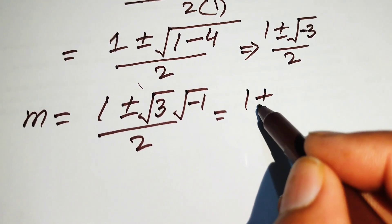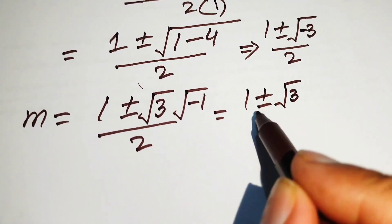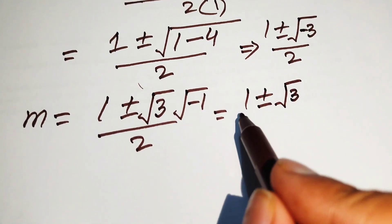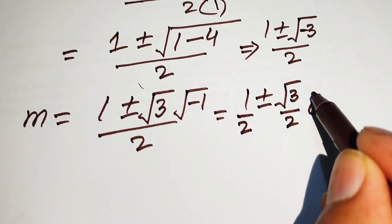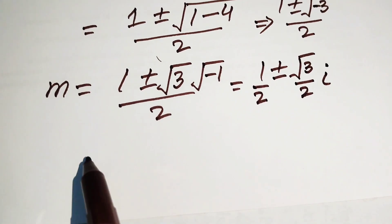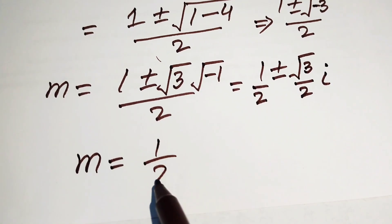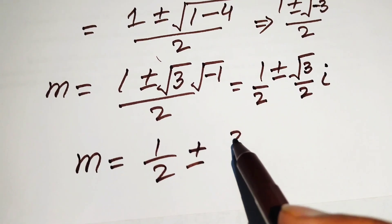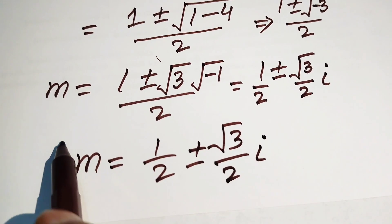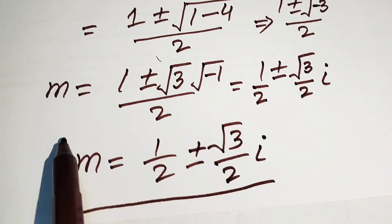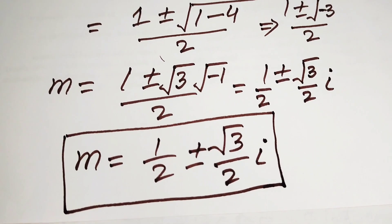We write m equals to 1 plus or minus square root of 3 times iota, all divided by 2. Separating the fraction, we get m equals to 1 over 2 plus or minus (square root of 3 over 2) times iota. So these are the two complex values of m for the given problem.